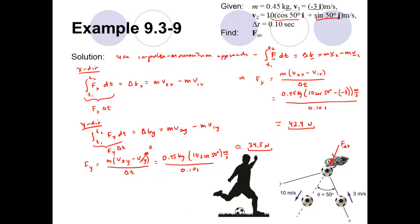If we were just finding the average force as a vector we'd be done — we have the x component and the y component. But we're specifically asked for magnitude and direction. To find the magnitude, we take the x component, 42.4 newtons, square it, add the y component, 34.5 newtons, squared, and take the square root of that sum — essentially applying the Pythagorean theorem. The magnitude is the hypotenuse of that right triangle. Punching that in, the magnitude of the average force is approximately 54.6 newtons.